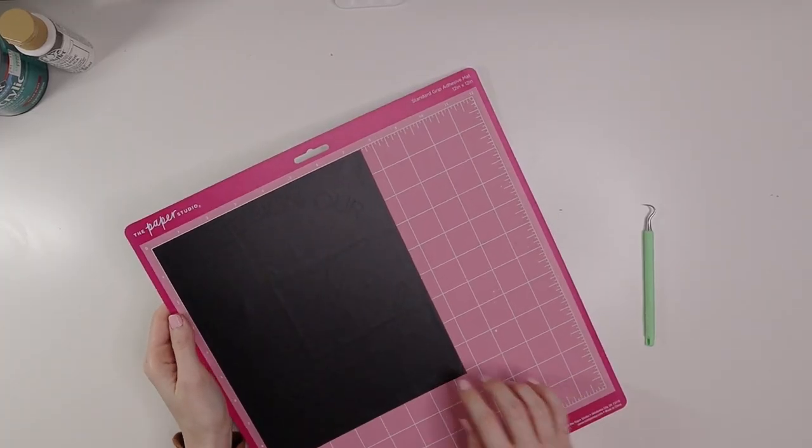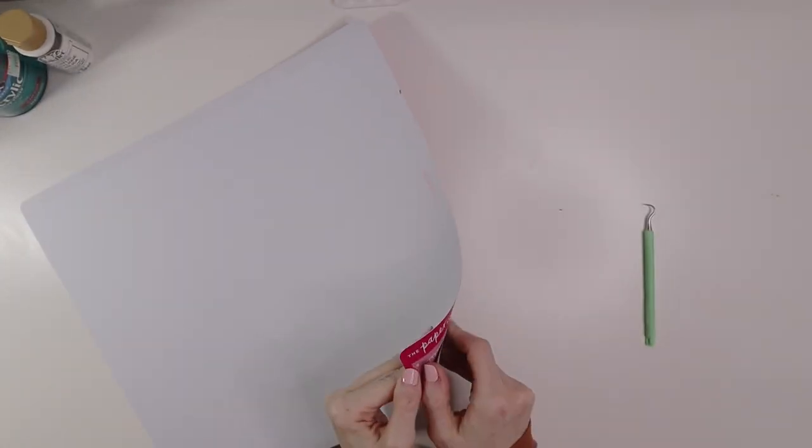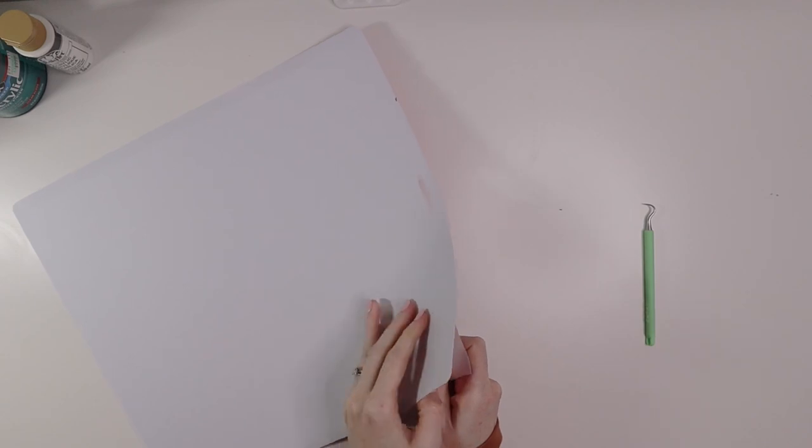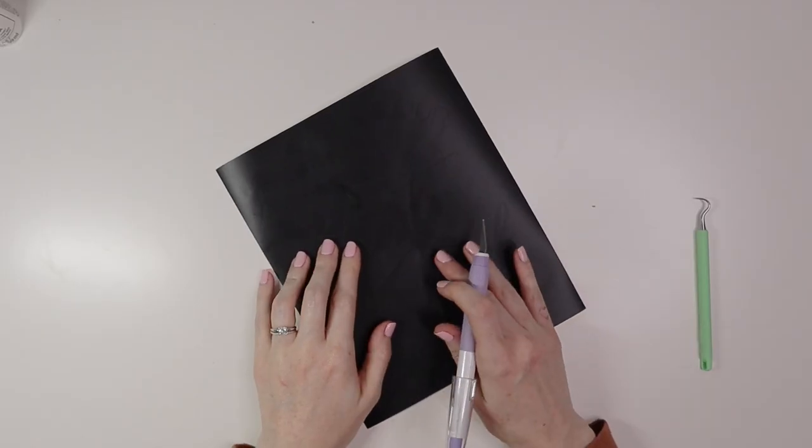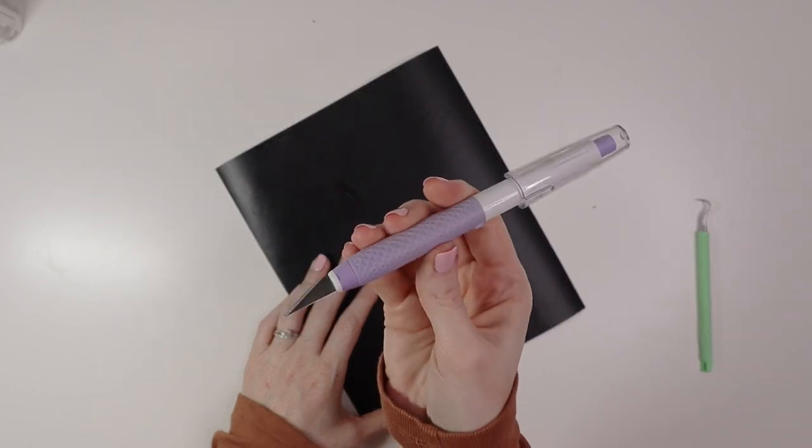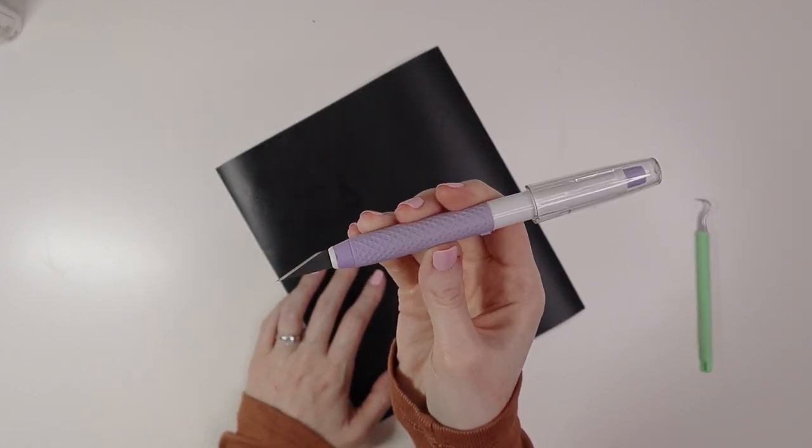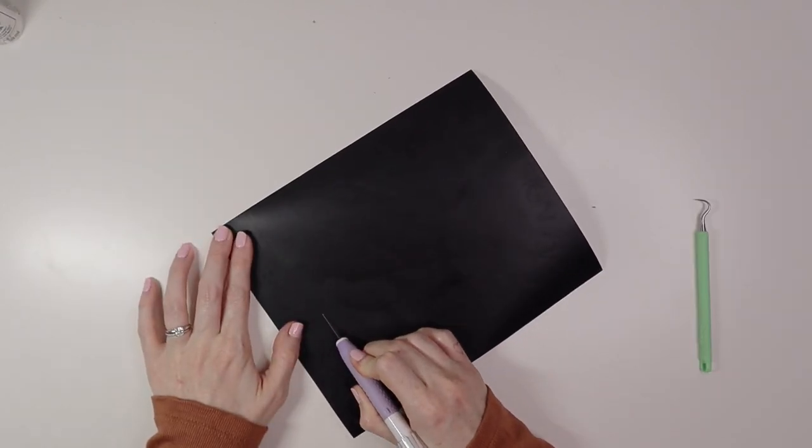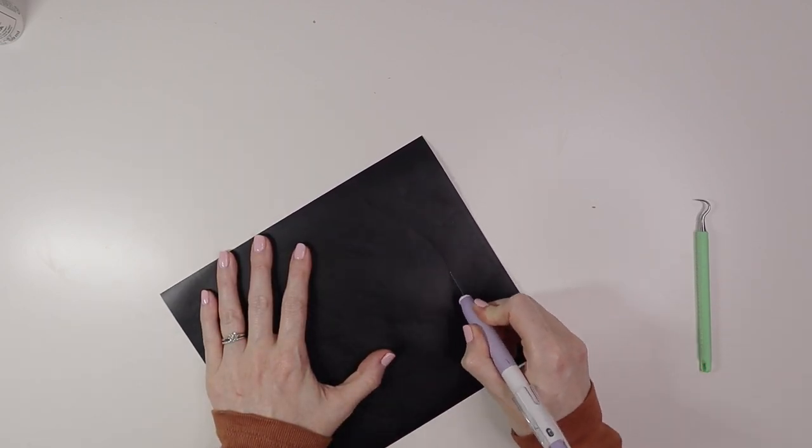Now that we have our vinyl cut, we're going to go ahead and get the vinyl off of the cutting mat. I like to do this by flipping my mat over that way the vinyl doesn't get all rolled up. Now we're going to go ahead and weed our vinyl. I like to use my Cricut knife to cut and separate the pieces so I'm not peeling it all at once. You don't have to do this step, but I do feel like it will help you in the weeding process. Just be sure not to cut any of the letters.